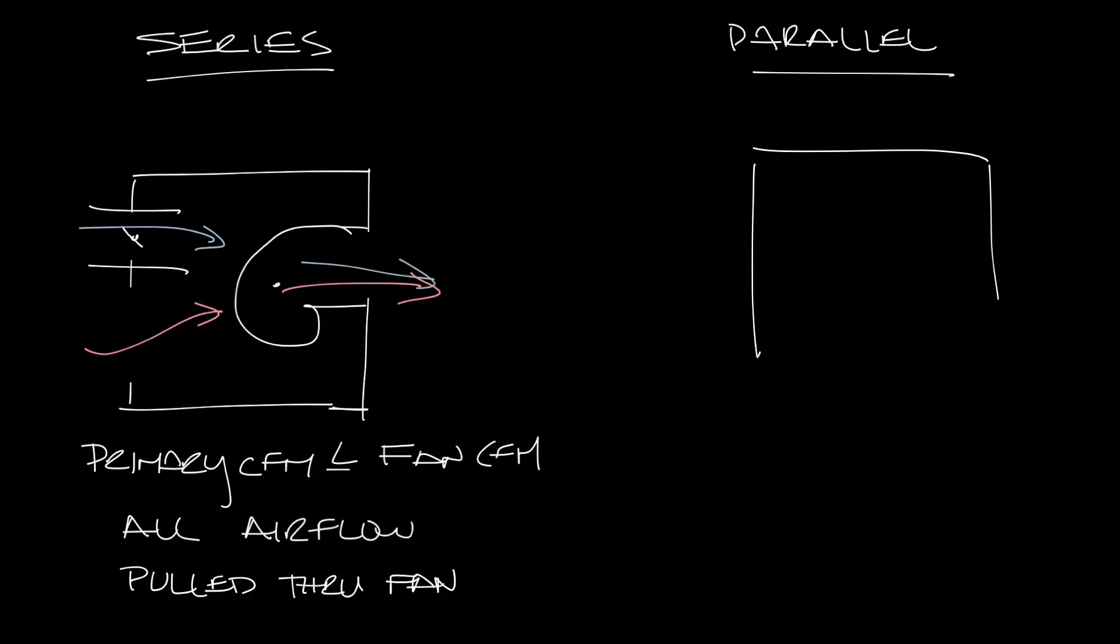Now let's draw a parallel fan box. In a parallel fan box you've got the fan mounted here pulling in the induced air. Let's open the primary air inlet, the induced air inlet, and a discharge for the fan and the box. Let's draw in the damper here.